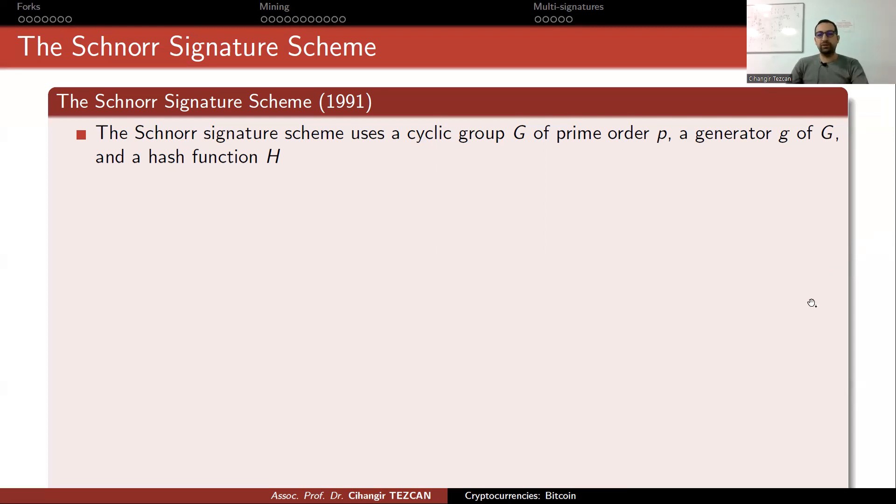So the Schnorr signature scheme uses a cyclic group G of prime order P, a generator g of G, and a hash function H. So you can use it with traditional groups, but also with elliptic curves. In Bitcoin, we are going to use the same group that we use for elliptic curve digital signature algorithm, which is the points on the elliptic curve SEC P 256 K 1.